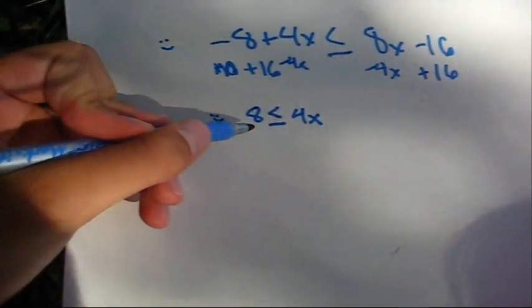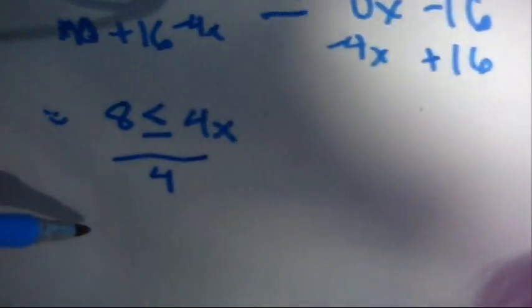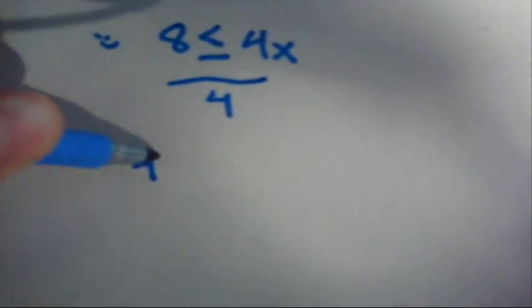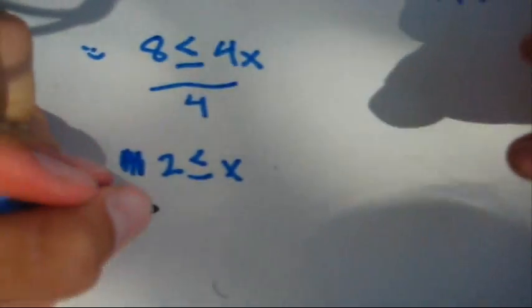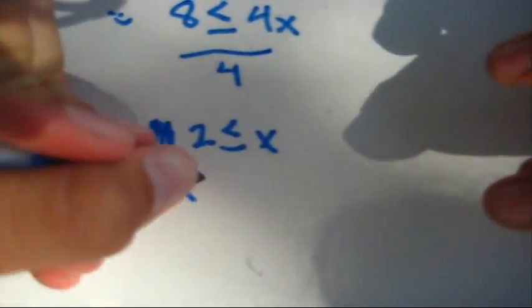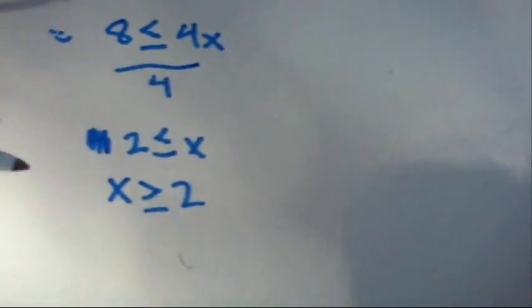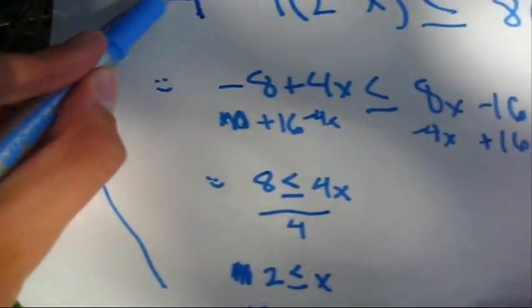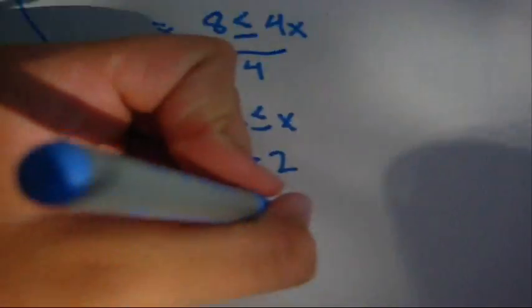Divide these by four, so you can get two over x. And then we're going to write it this way instead, because it's better. And that's how you figure out this up here, but we have to show you how to do a number line also.